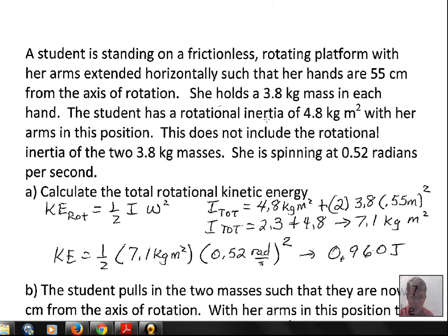We don't have a table that calculates I, the rotational inertia for a person, so we're going to say—and this is a made-up number—the student has a rotational inertia of 4.8 kilograms meters squared holding out the arms.